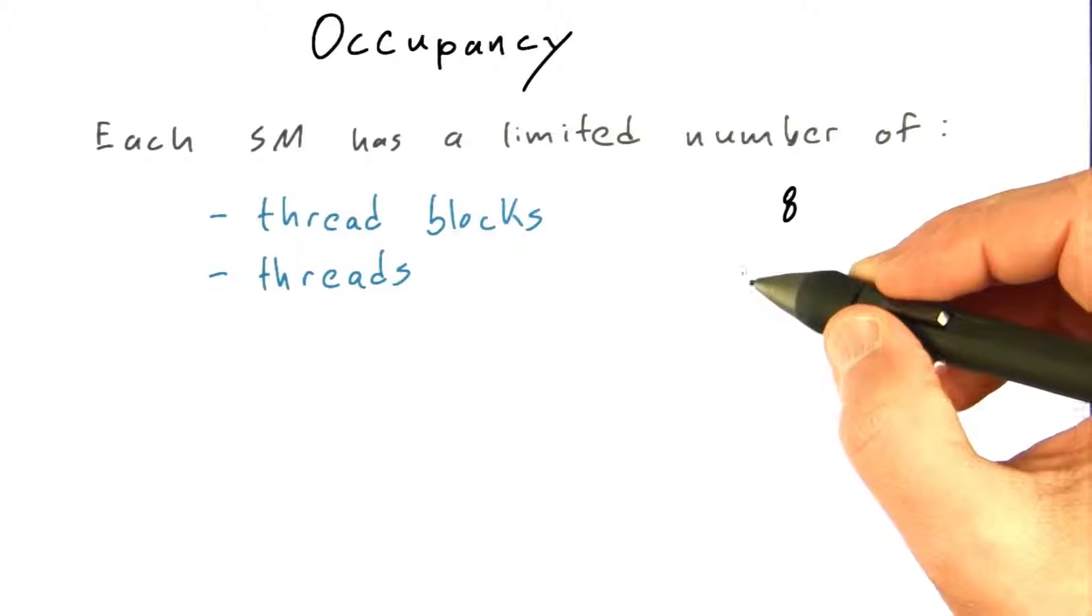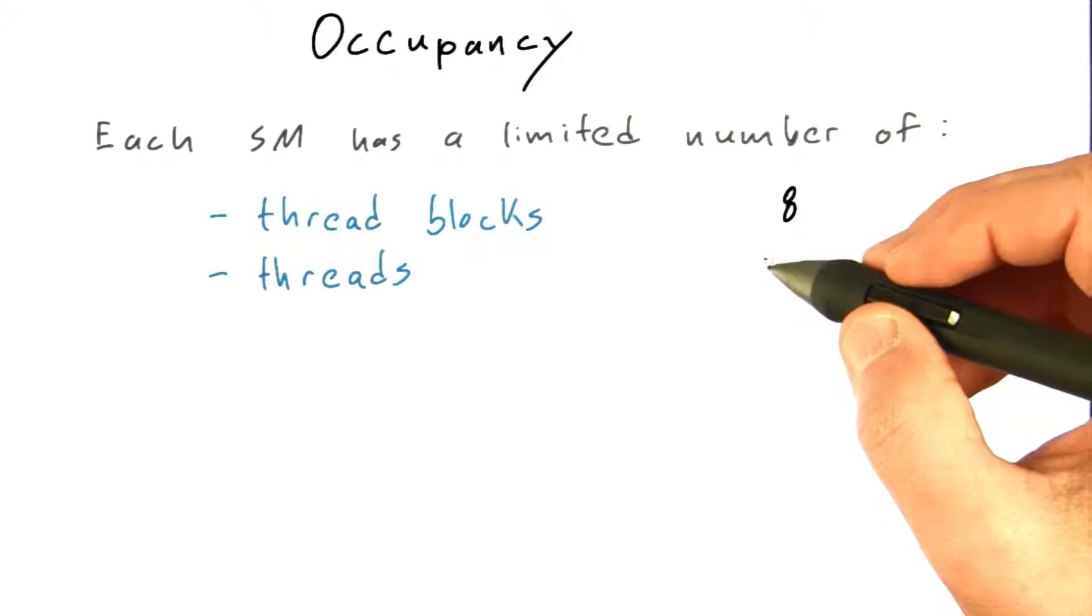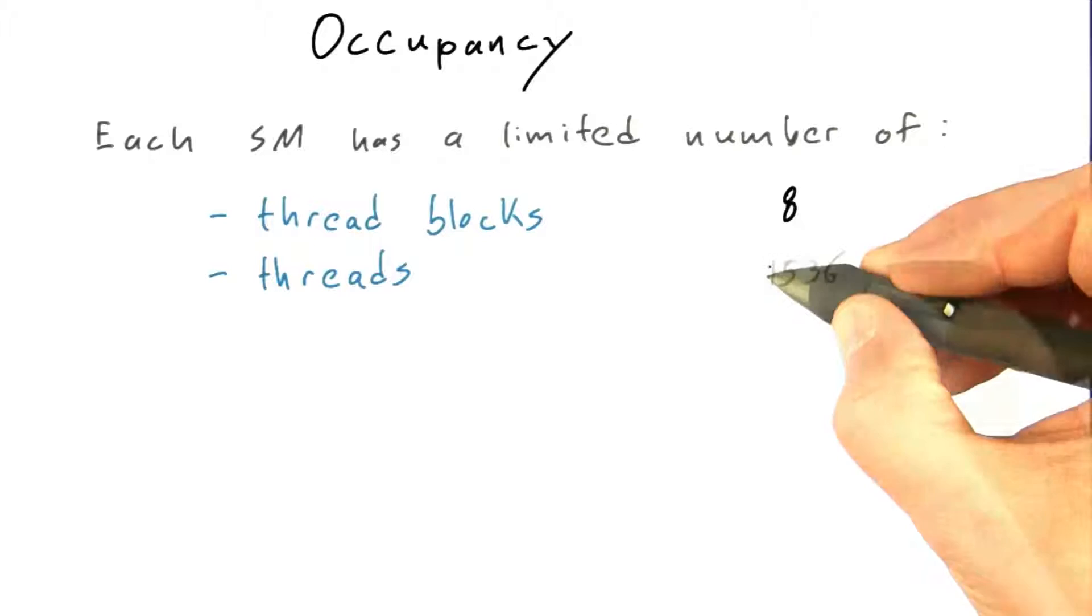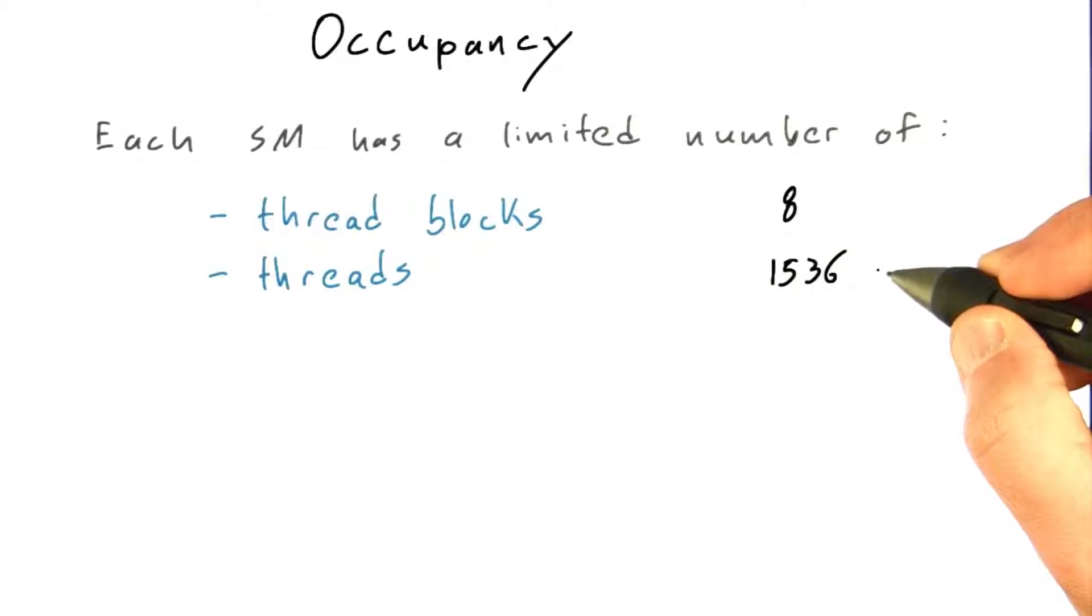There's a maximum number of threads that a single SM can run across all of the thread blocks on it. This number ranges on modern GPUs from about 1,500 threads on, for example, the Fermi-based GPUs that you use on Amazon, or up to 2,048 threads on the Kepler GPU in my laptop.